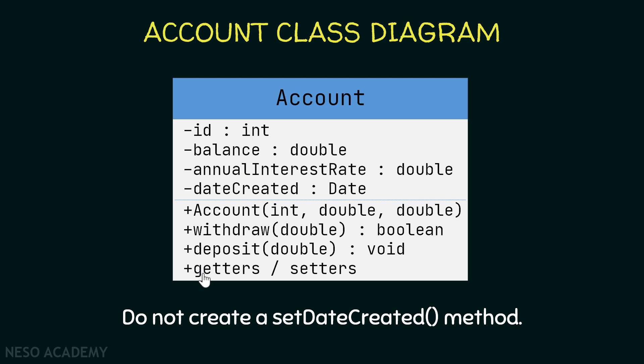Finally we want to create all the getters and setters for the attributes, but we don't want to create a setDateCreated method - we don't want users of our class to change the dateCreated value after the account has been created. The constructor doesn't receive a value for dateCreated; it will be instantiated inside the constructor to hold the current date and time. Pause the video and try to implement this class.